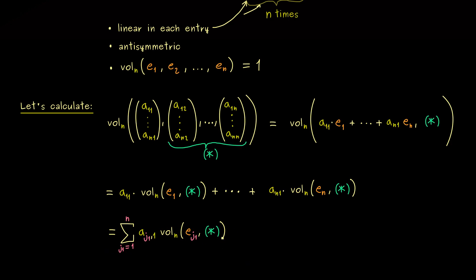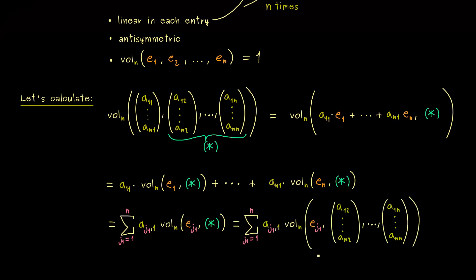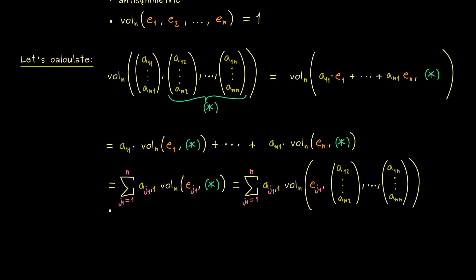Okay, and now in the next step we can resubstitute our star here. After doing that, we see we can do exactly the same thing again but now for the second entry here. Hence, if we do that, we get a second sum here.